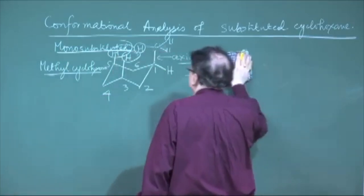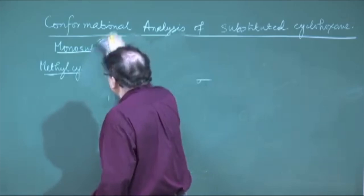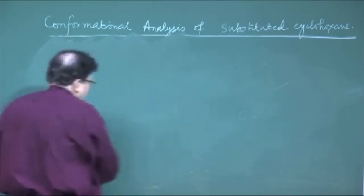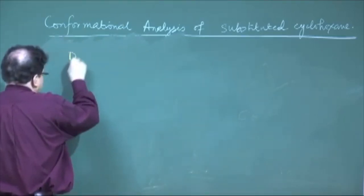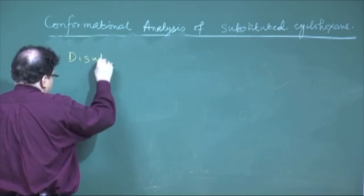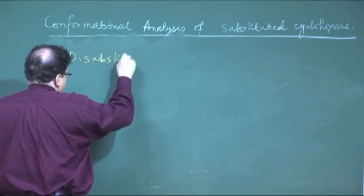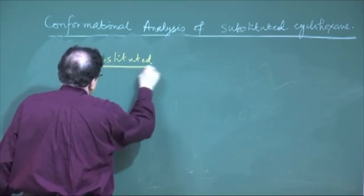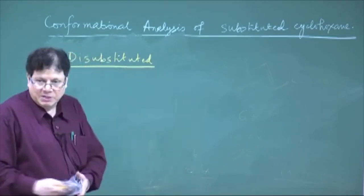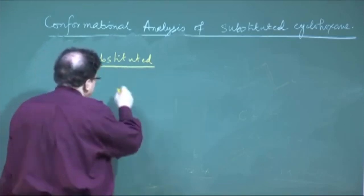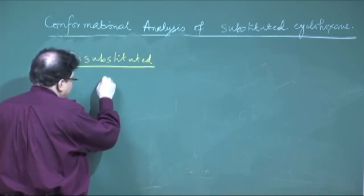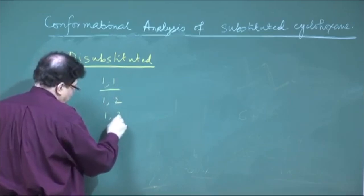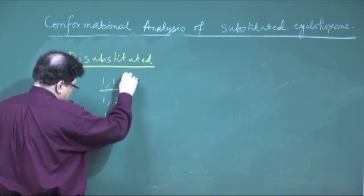Now we move to the disubstituted cyclohexane system. Disubstitution can be of various types: 1,1; 1,2; 1,3; and 1,4.